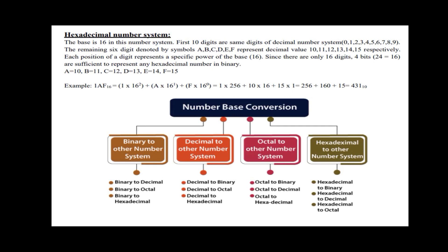If you look at the exam, number system conversion: binary converts to decimal, octal, hexadecimal — that gives 3 conversions. Decimal converts to binary, octal, hexadecimal — 3 more. Octal converts to binary, decimal, hexadecimal — 3 more. Hexadecimal converts to binary, decimal, octal — 3 more. So we will learn a total of 12 conversions.